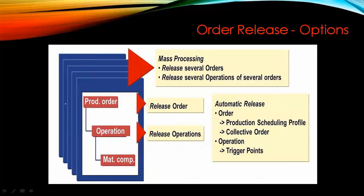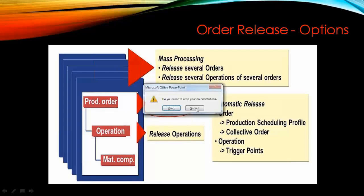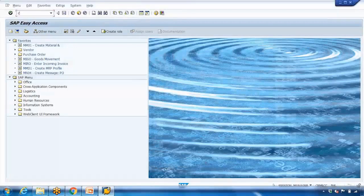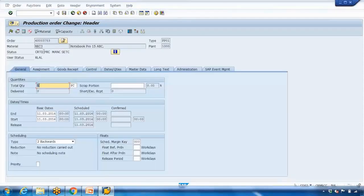With regards to the order release process, there are two types of release in a production order. The first is order release at the header level. Let me show you this again. Whenever you create an order, by default it will be in 'Created' mode. If I call up this order, you can see the status showing 'CRTD', which means the current status is 'Created'. If you click on the information button, it will show you the status is 'Created'.